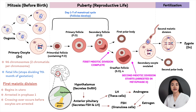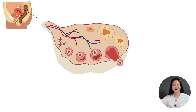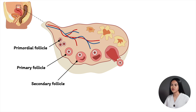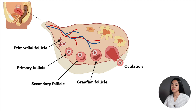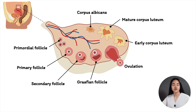Let's recap follicular growth: it starts as a primordial follicle, develops into a primary follicle, then a secondary follicle with a developing antrum. On day 7 of the menstrual cycle, one follicle is selected as the dominant or Graafian follicle. From days 14 to 15, ovulation occurs and the secondary oocyte is released as the follicle ruptures. The remaining follicle stays inside the ovary and eventually develops into the corpus luteum, which will be covered in the ovarian cycle lecture.